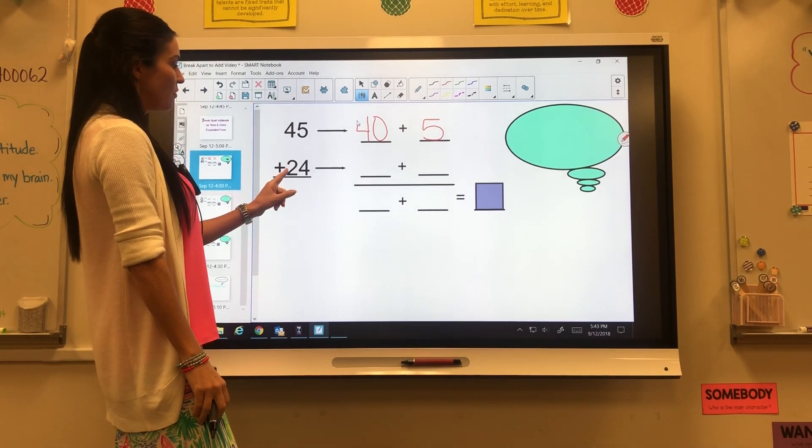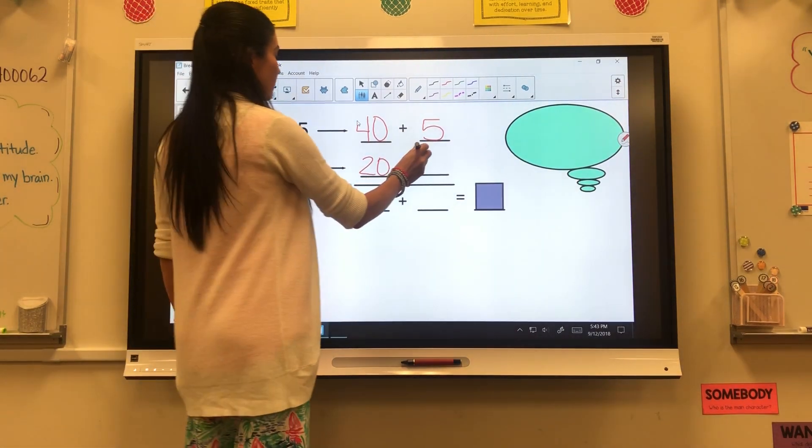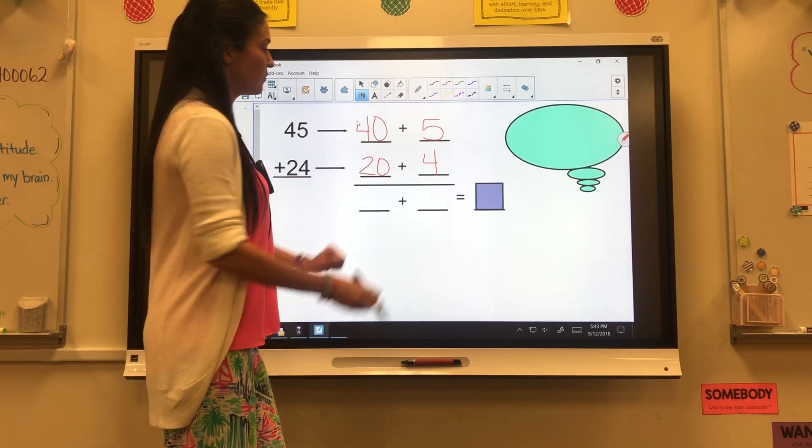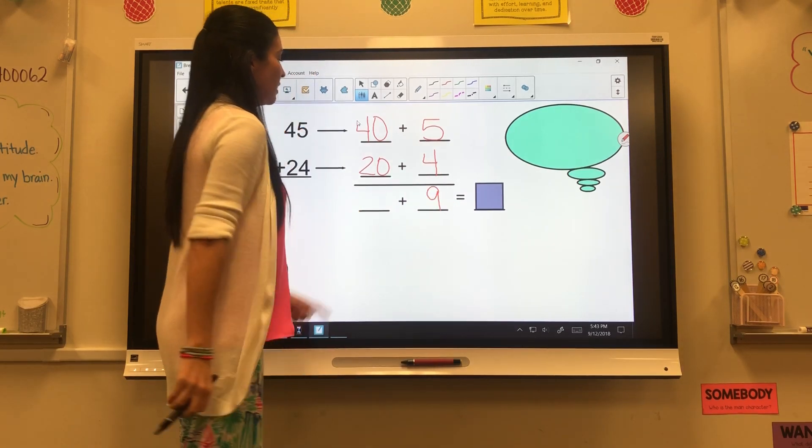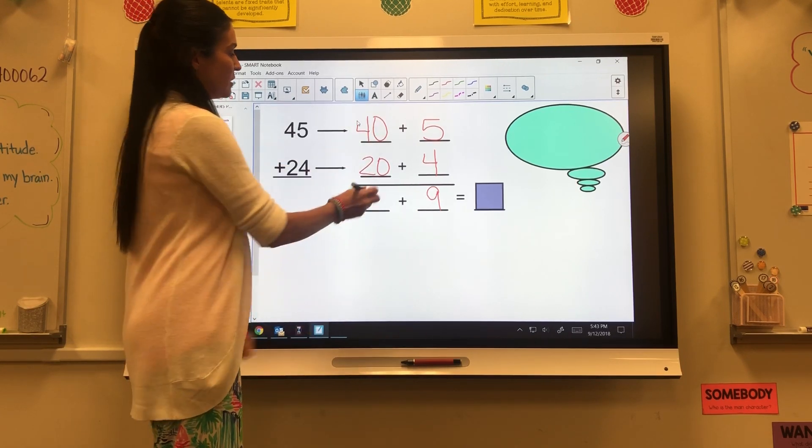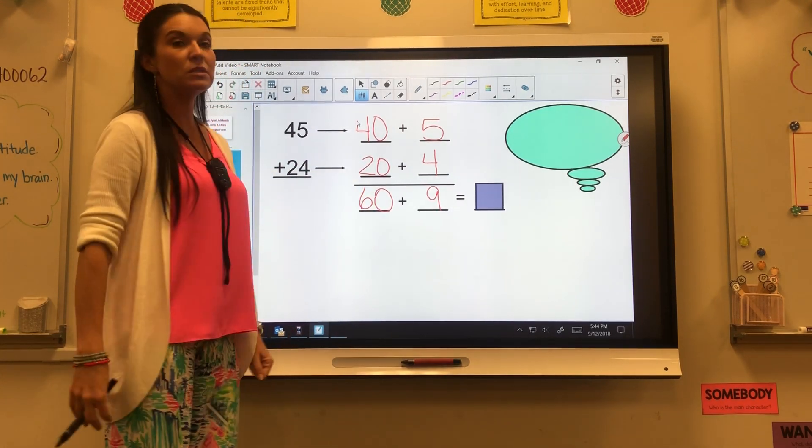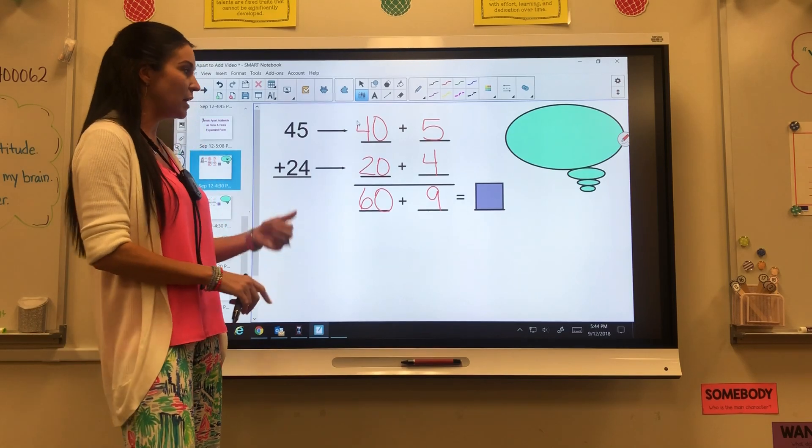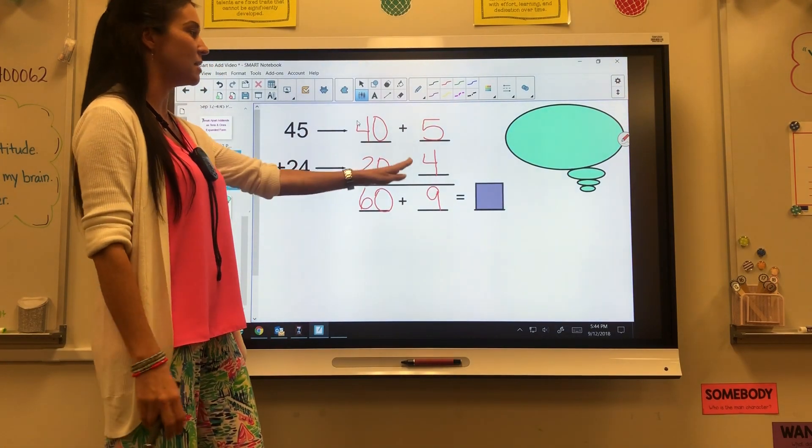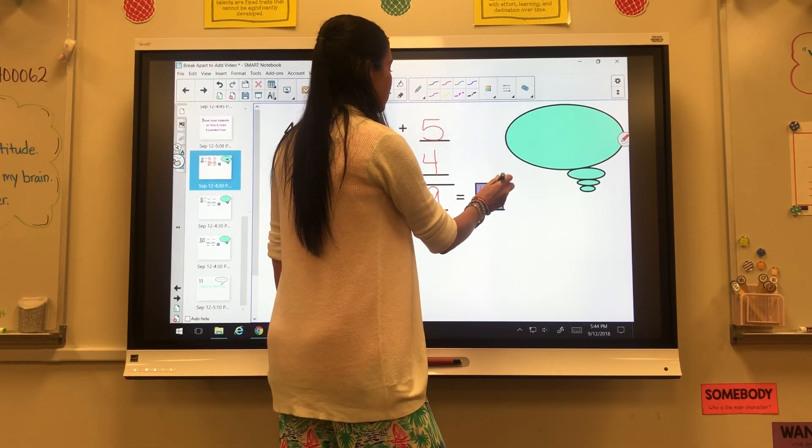For 24, the value of the 2 in the tens spot is 20. The value of my 4 in the ones spot is 4. So I have 20 plus 4. Now I'm going to add these together. 5 plus 4 is 9. And then there's two ways you can do this. They can line it up and know 0 plus 0 is 0. And then 4 plus 2 is 6. For some students, it's easier for them to just count on by tens. They start at 40, and then they go 50, 60, and then they know it's 60. Whatever is easiest, as long as they're using this form.